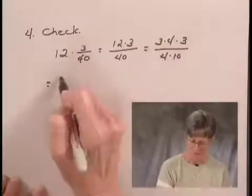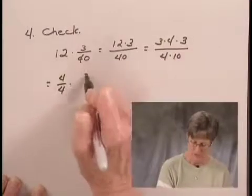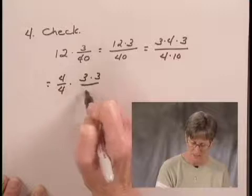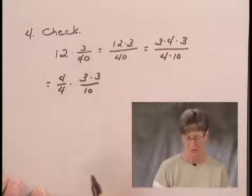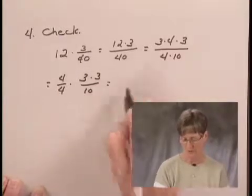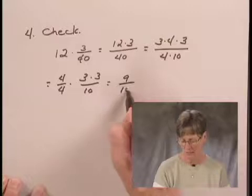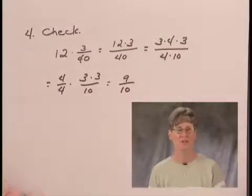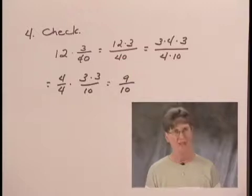I can pull out the 4s. I have 4 over 4 times 3 times 3 over 10. 4 over 4 is equal to 1. So I'm left with 3 times 3 over 10 or 9 over 10, which is the original length of the piece of taffy we started with. So the answer checks.